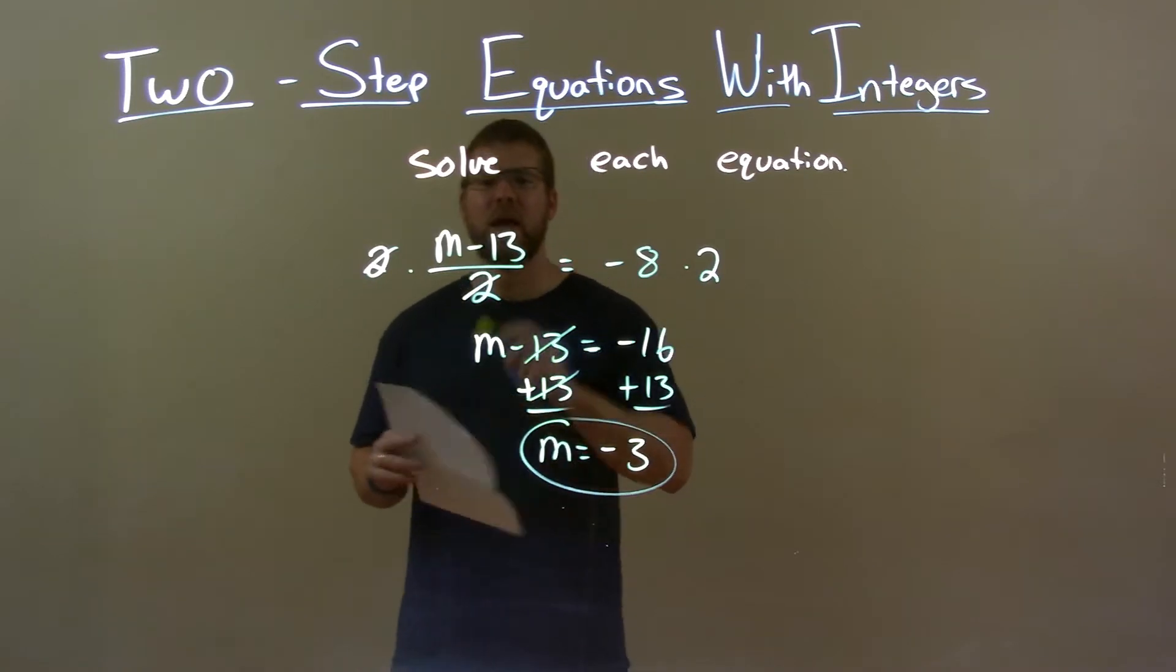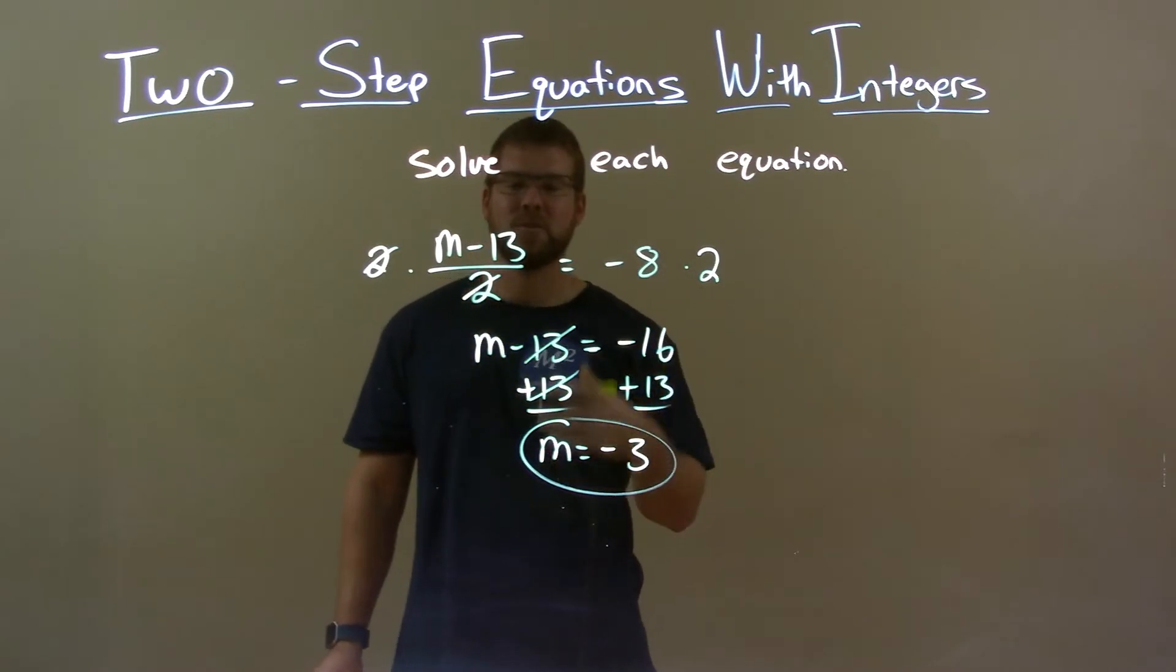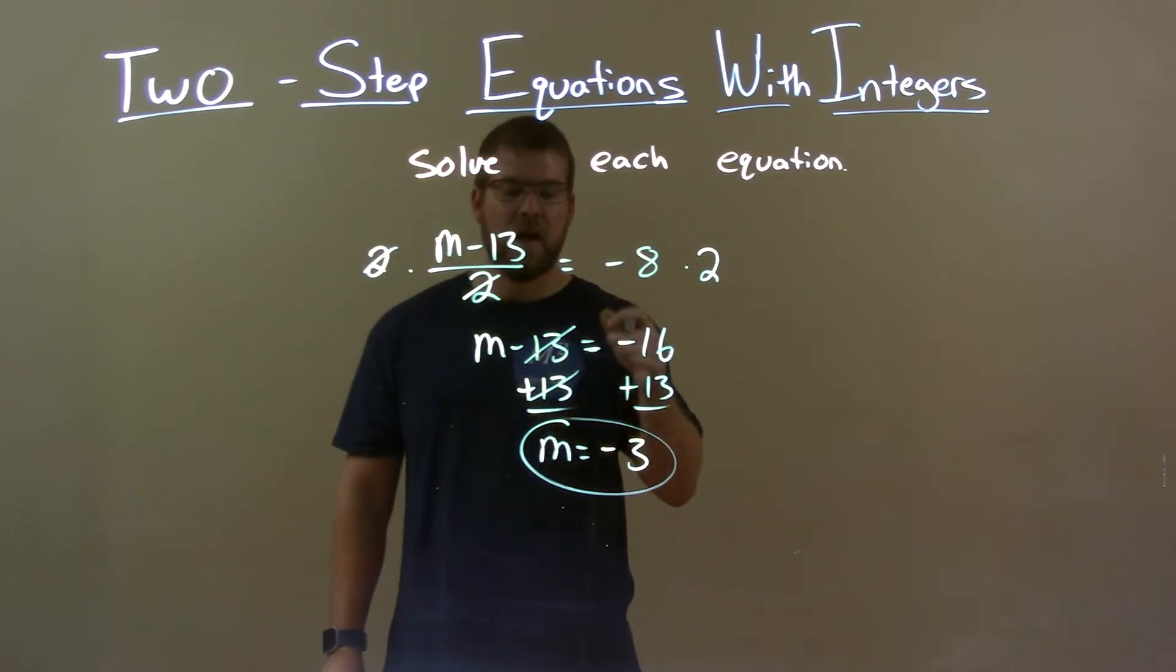Quick recap. We're given m minus 13 over 2 equals negative 8, and we want to solve for m. Multiply both sides by 2, then add 13 to both sides. That gave me my final answer, m equals negative 3.